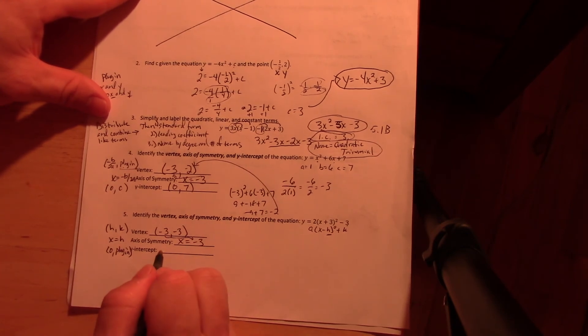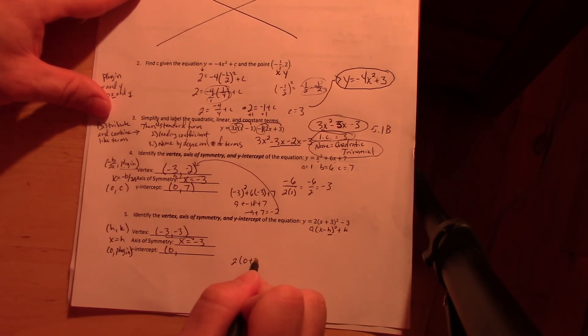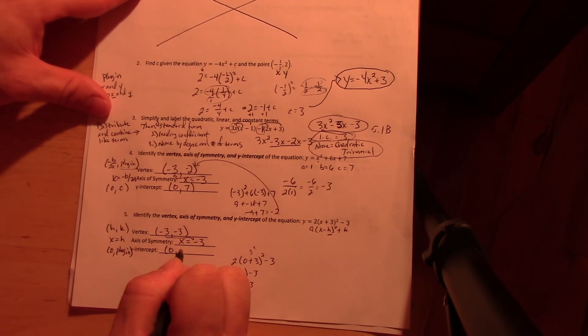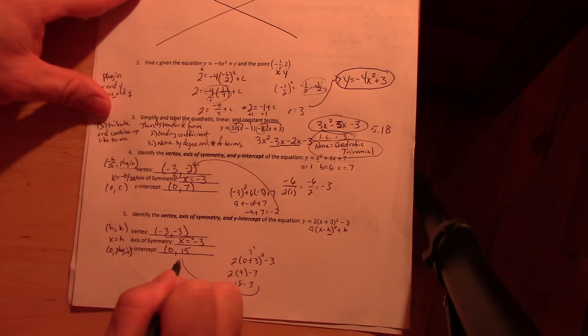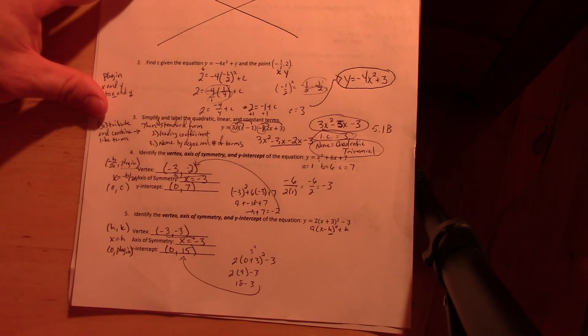For the y-intercept, it's always zero. Plug it in. Well, if I plug zero in here and go through the math here fairly quickly: 2 times this is 3 squared, which is 9, minus 9, and 18 minus 3 is how I get 15 right there. There's page 1. Stay tuned for page 2.